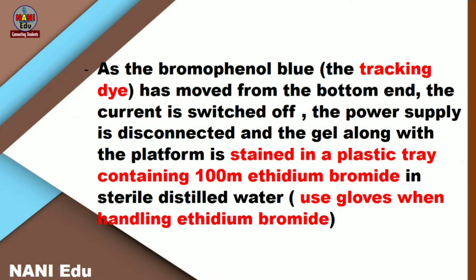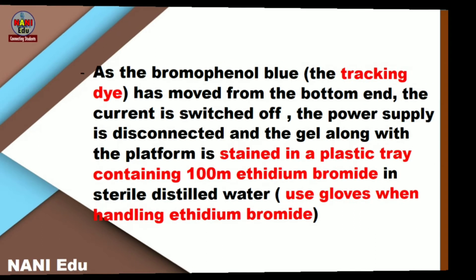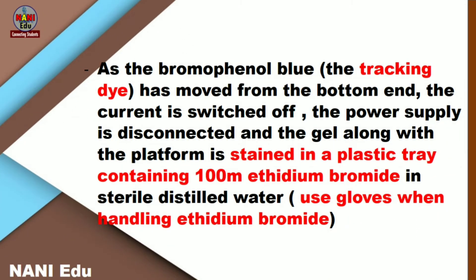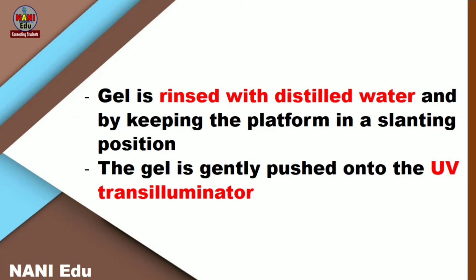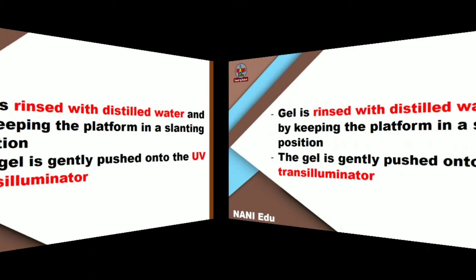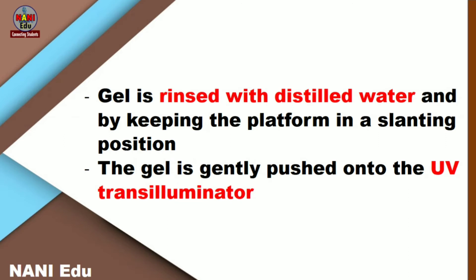When you load the gel in the well, the bromophenol blue — it is called the tracking dye — it moves from the bottom end when the current is switched on at low voltage. When it crosses the well, you can increase the voltage — that is very important. After running the gel, you have to stain with ethidium bromide. We are adding the ethidium bromide inside the tank buffer rather than using a staining tray. When you use ethidium bromide, always wear gloves.